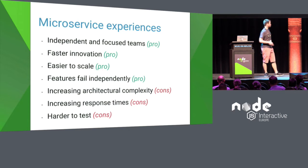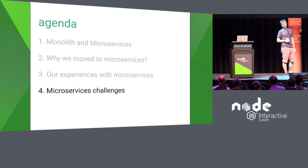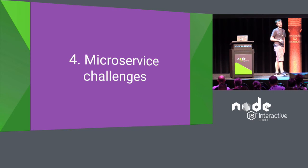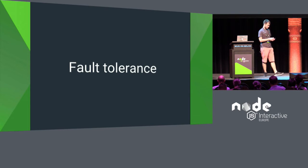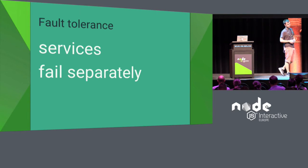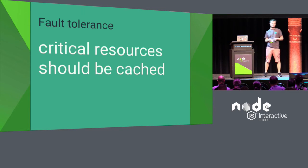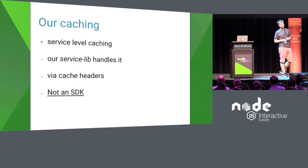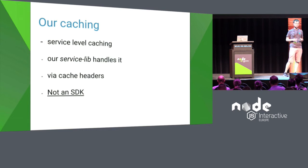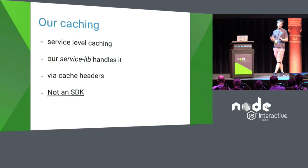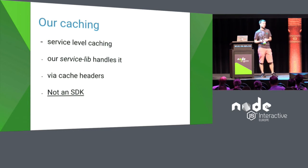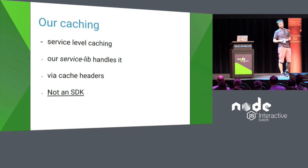Now let's look at the challenges and our solutions. For fault tolerance, services should fail independently, but that's not always possible because you have critical resources that should be cached. For this we have service-level caching using a wrapper library that provides extra functionality for communication. It's not an SDK of the service — it's the same library in every service, providing caching, helpers for mocking services, and some extra security layers.